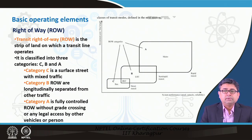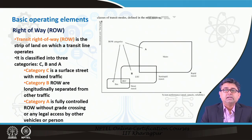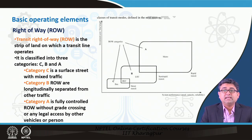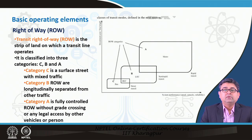Transit right of way is defined as a strip of land on which a transit line operates, and it can be classified into three subcategories: C, B, and A. Category C is a type of right of way where a surface street with mixed traffic exists and the transit runs on that surface street itself.